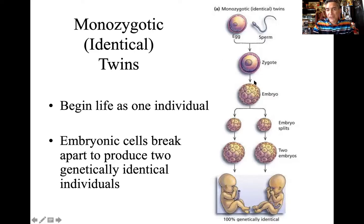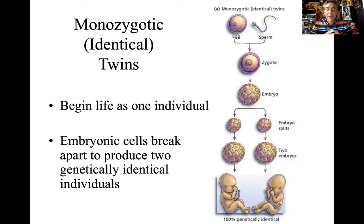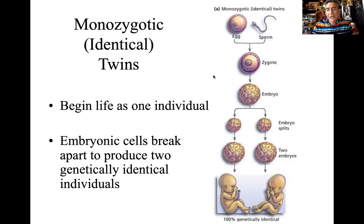The fertilized egg undergoes mitosis. Cell junctions are supposed to form — tight junctions, desmosomes, and gap junctions — and those are supposed to solidify and hold this little cluster of cells together. For whatever reason, those junctions don't hold properly. So monozygotic twins is essentially a cell junction issue. We could present monozygotic twins in chapter seven with cell junctions. It functions like a cancer cell — when we talk about metastatic cancer cells that break apart from each other, this embryo breaks apart.